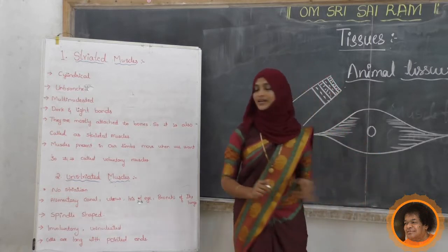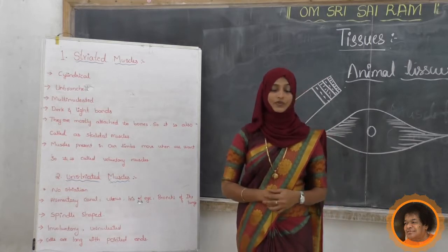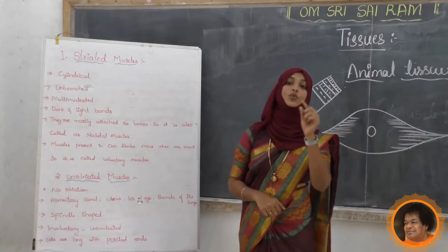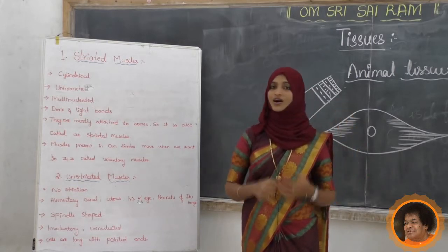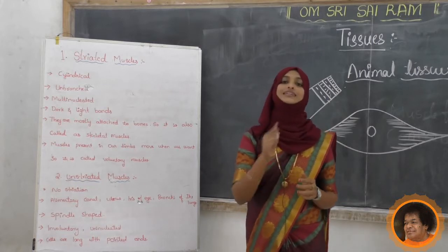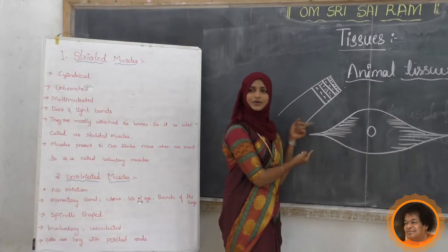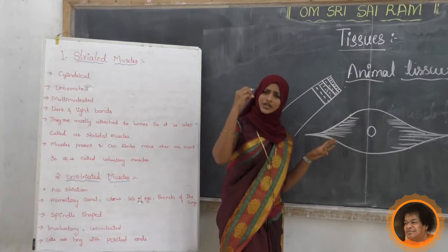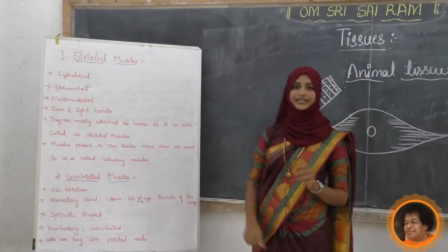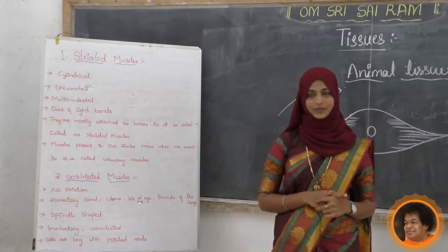The shape is spindle-shaped. Whether it is voluntary or involuntary? It is involuntary. Involuntary means it is not something we consciously move. While studying striated muscle, we said we can lift our hands and walk - that is voluntary. But these spindle-shaped muscle cells are involuntary in nature and uninucleated. Each cell has a pointed end - cells are long with pointed ends.